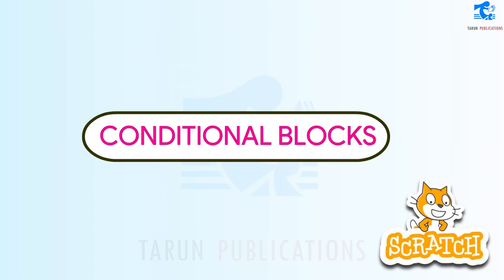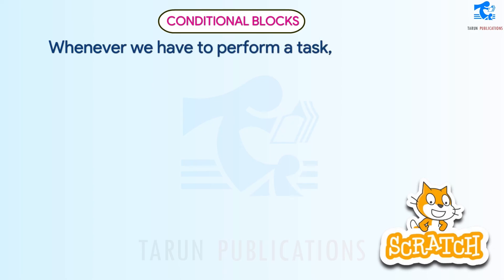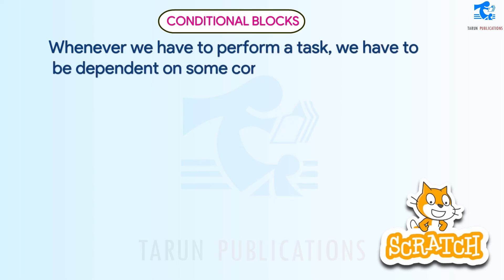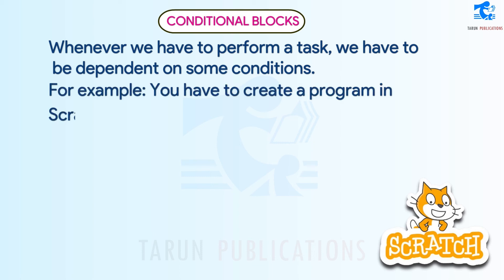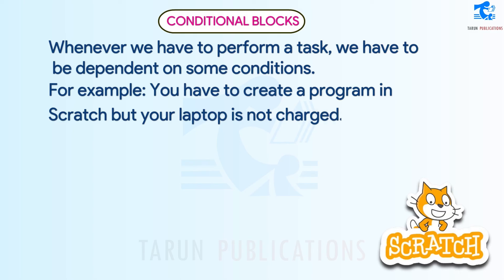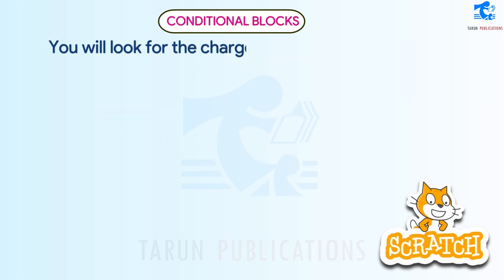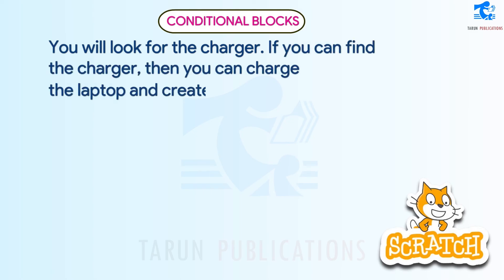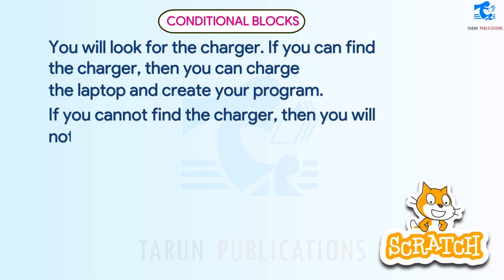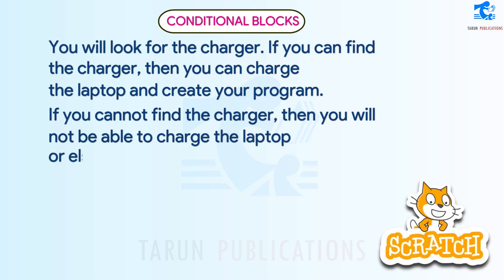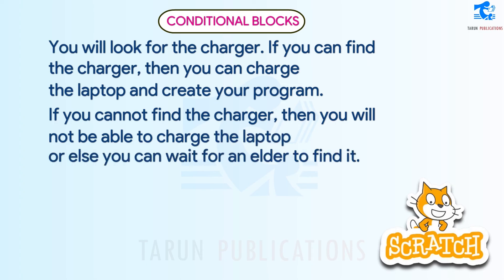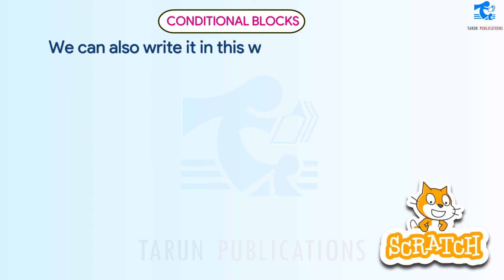Conditional blocks: Whenever we have to perform a task, we have to be dependent on some conditions. For example, you have to create a program in Scratch but your laptop is not charged. There are two conditions: you will look for the charger. If you can find it, you can charge the laptop and create your program. If you cannot find the charger, you will not be able to charge the laptop, or you can wait for an elder to find it.